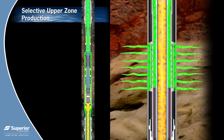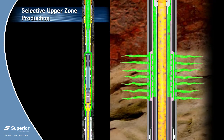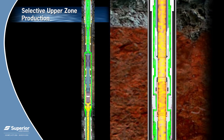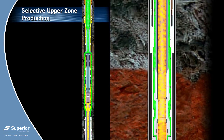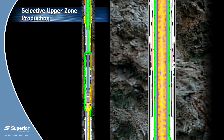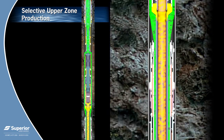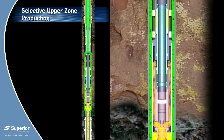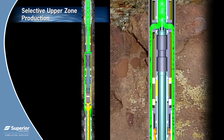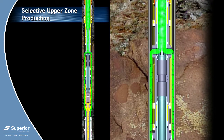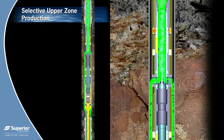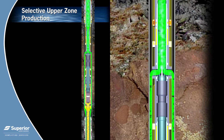The production flow path for the upper zone is through the upper zone production screen, around the upper isolation tubing, through the annular flow valve, into the annulus surrounding the lower zone pressure containing shroud, and up the annular flow path into the upper hydraulic multi-service valve. Production continues via the production tubing.